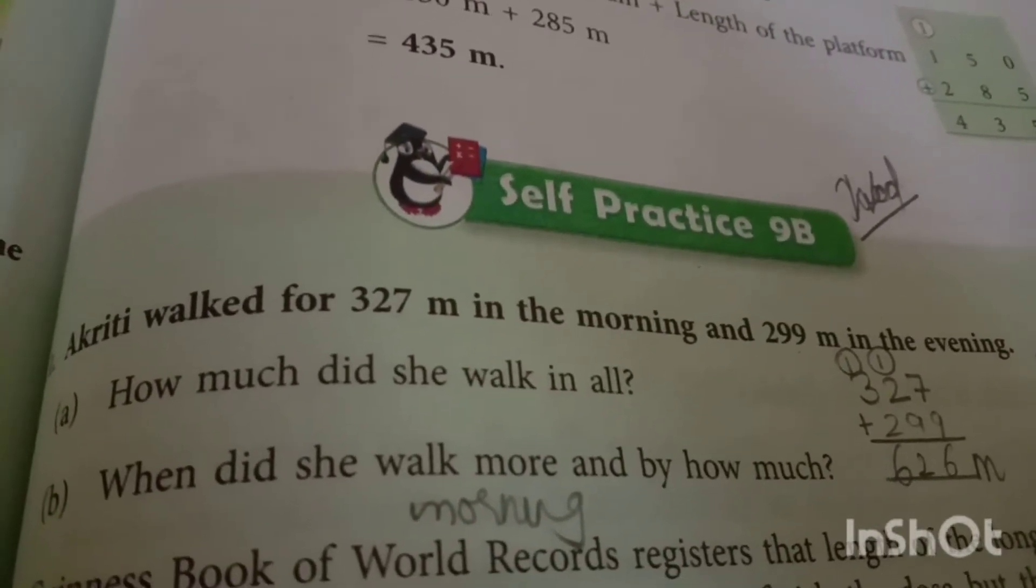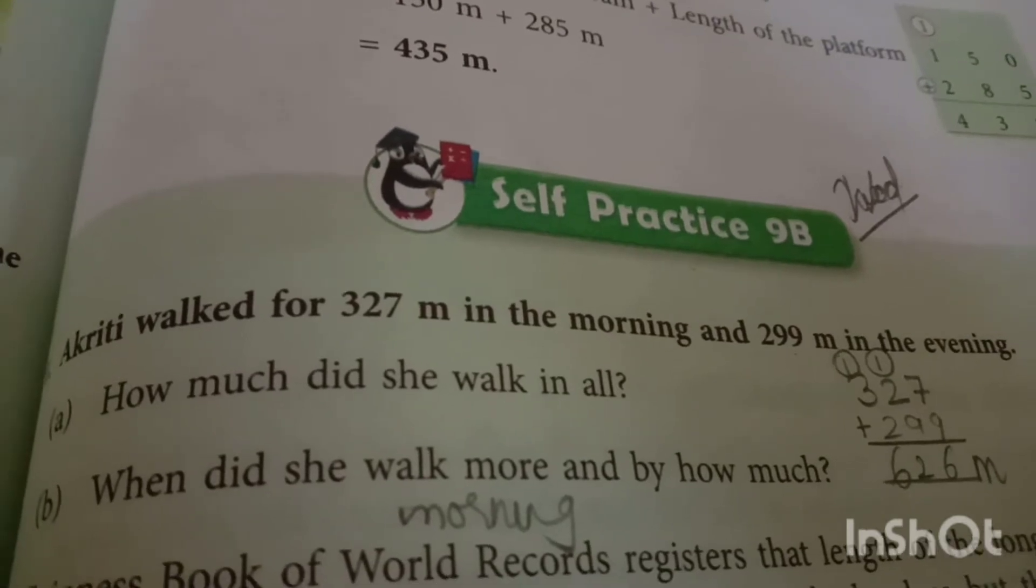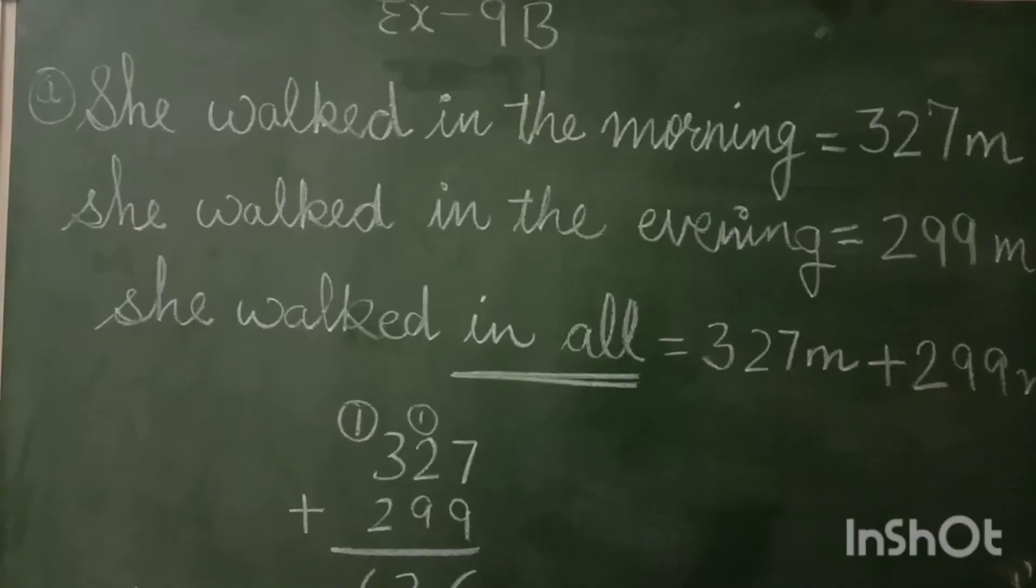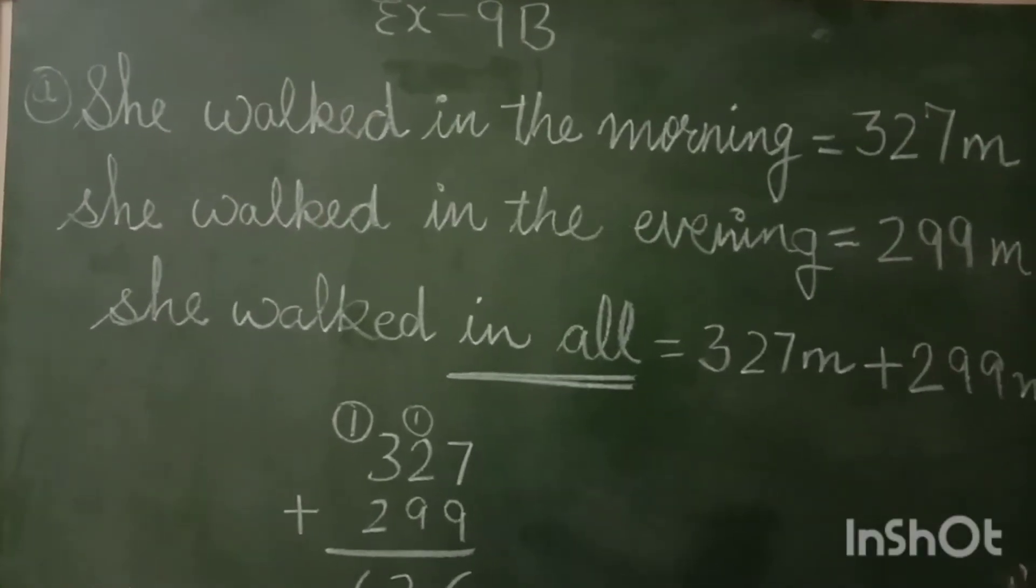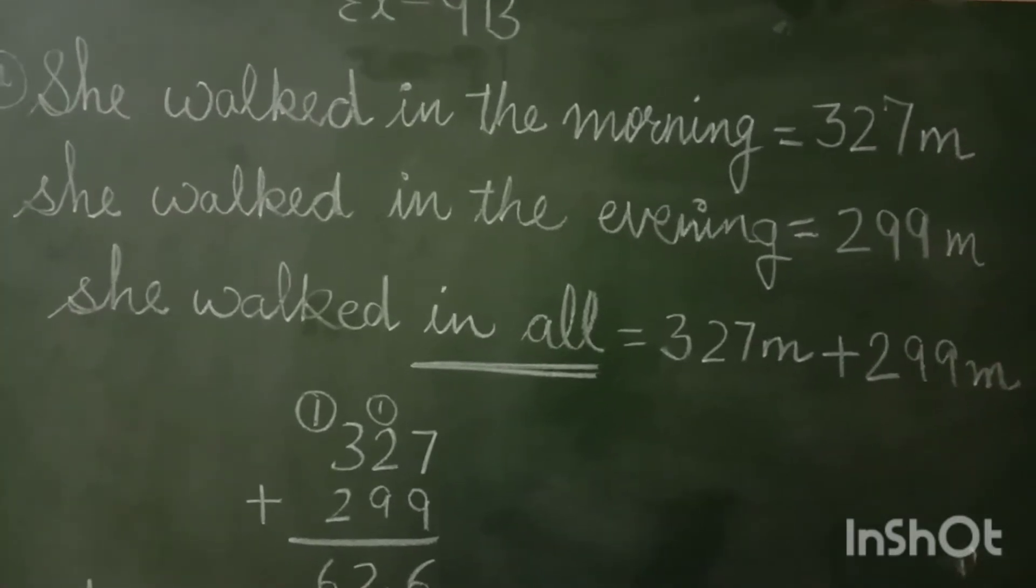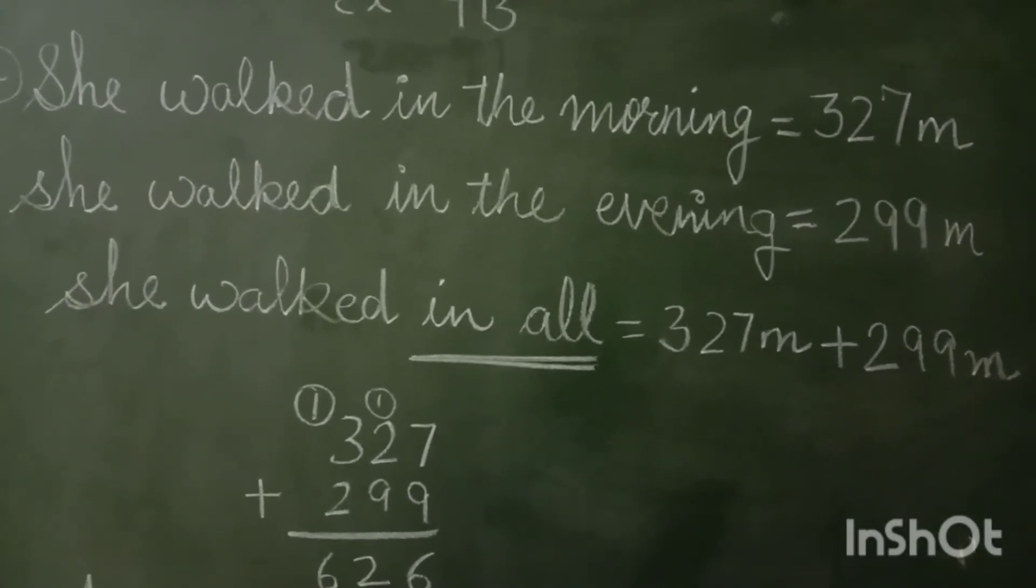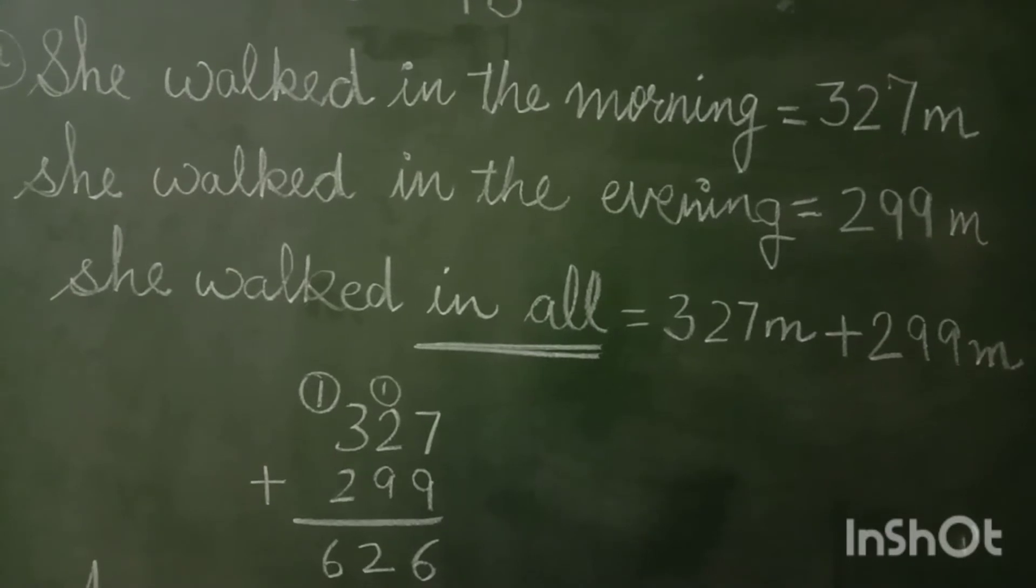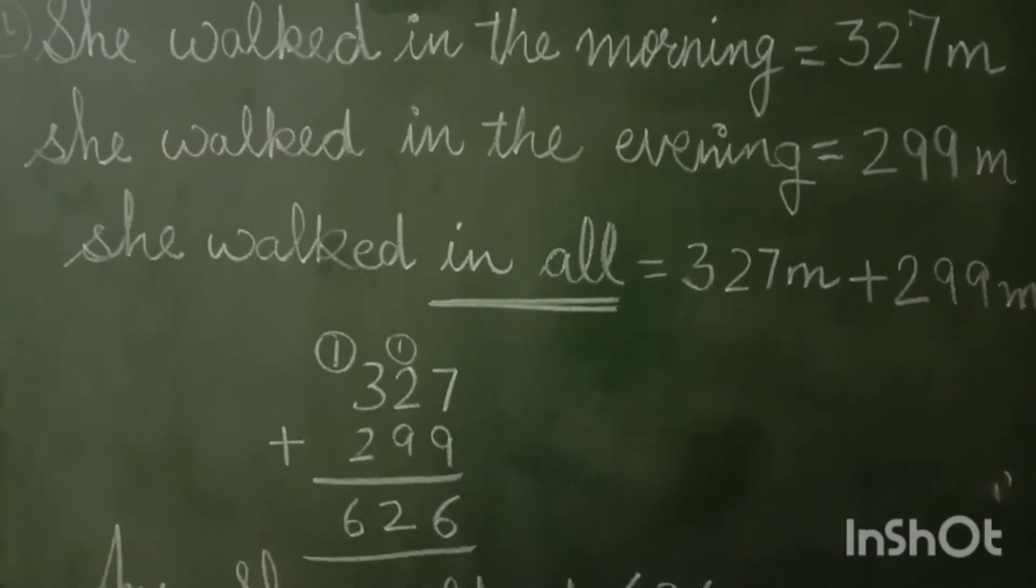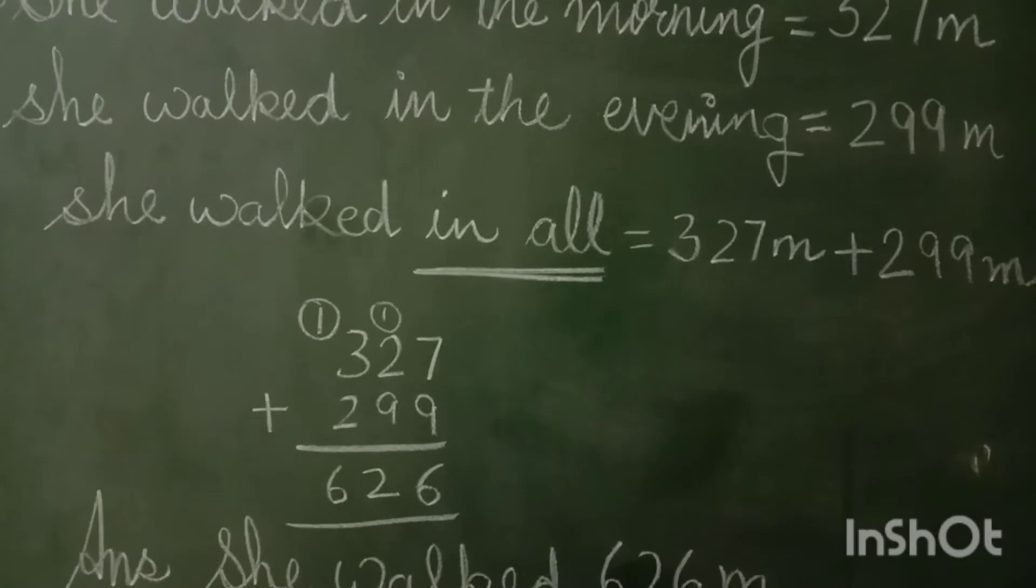I will solve this question on the blackboard so that you can understand nicely. We will write sentences like this: She walked in the morning 327 meters. She walked in the evening 299 meters. Then third sentence: She walked in all.